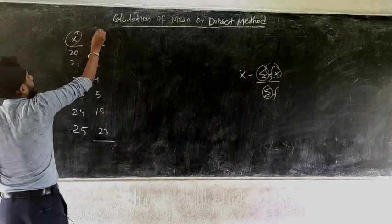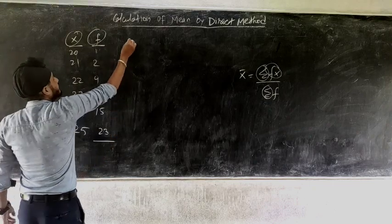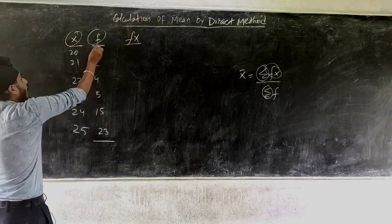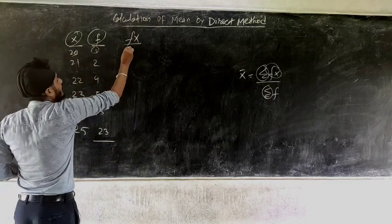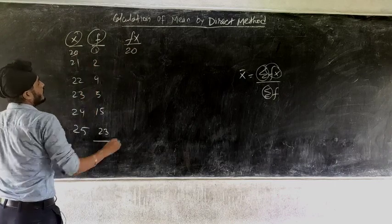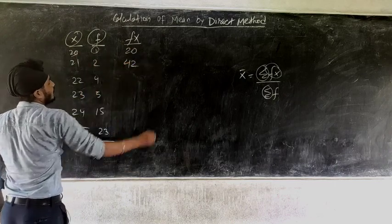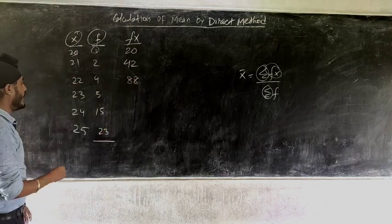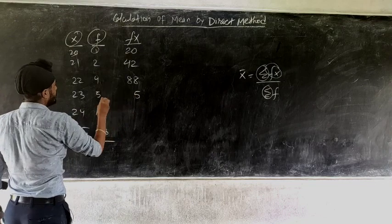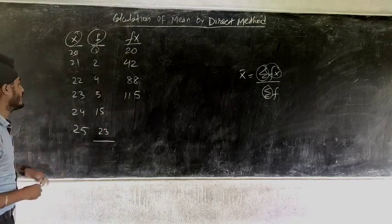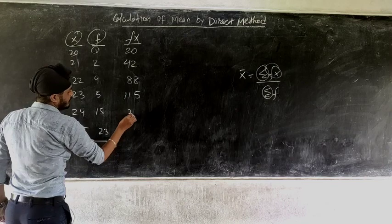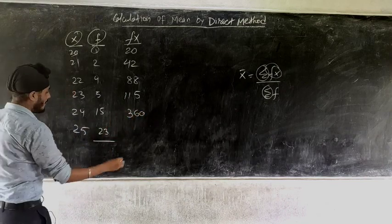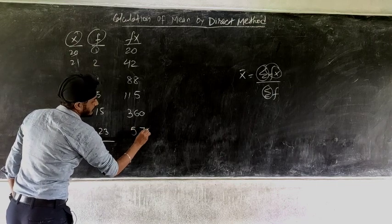Here you have x and here you have f. First you need to find fx, which means f multiplied by x. So: 1 × 20 = 20, 2 × 21 = 42, 4 × 22 = 88, 5 × 23 = 115, 15 × 24 = 360, and 23 × 25 = 575.